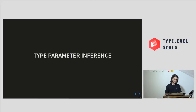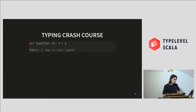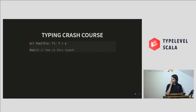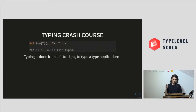Type parameter inference — what is it? When you have a definition like this foo, which takes a type parameter T and then takes an argument of type T and returns an argument of type T, and then you want to type foo of one — so you want to infer the type parameter T in this call to foo — how does that work? To understand that, we need to understand a bit about how typing works.